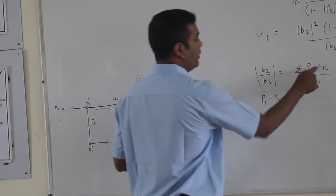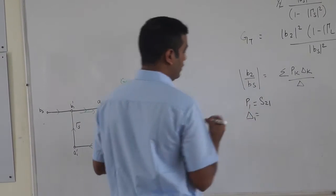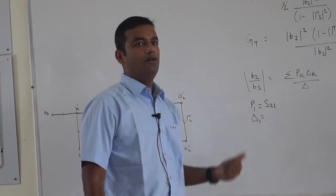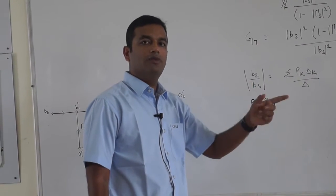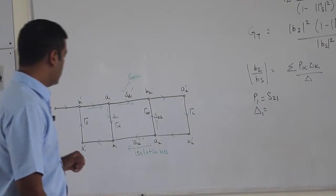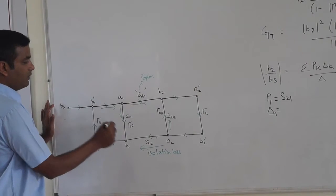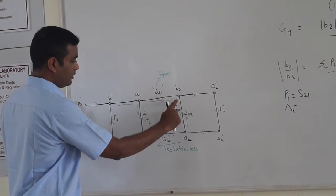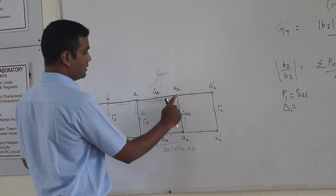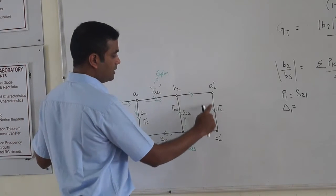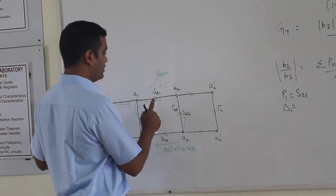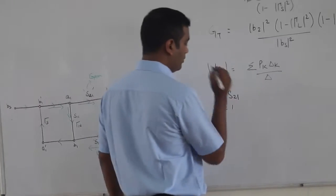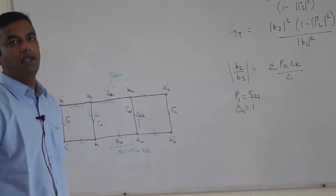Δ_1 is the gain of any loop not touching the forward path. Examining all loops: one loop touches the forward path, and the other loop also touches the forward path. There is no closed loop that does not touch the forward path, so Δ_1 = 1.